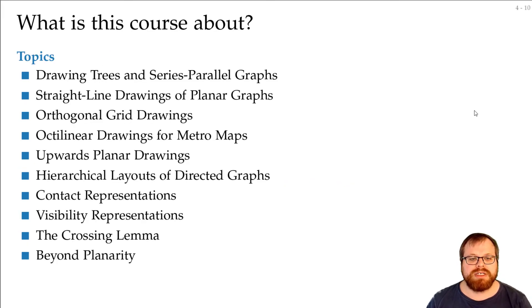These are the topics I chose to talk about. This is still subject to change, but the list will be very close to this. We'll start with drawing very simple graphs, trees and series-parallel graphs. Then we have three lectures about straight-line drawings. We'll move on to more specific drawing styles: orthogonal with only horizontal and vertical edges, octilinear where you can also have diagonal edges, upwards planar drawings where all edges are directed upwards. In hierarchical layouts you have a pipeline of algorithms. We'll look at different representations like contact and visibility representations, how many crossings we need in any drawing, and graph classes that cannot be drawn crossing-free but maybe have specific properties like every edge can only be crossed once.